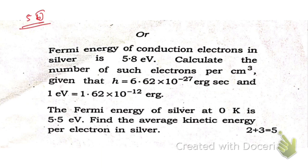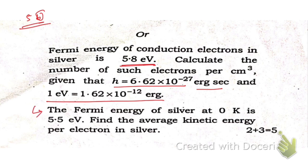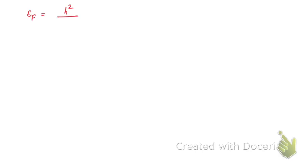Question number 5B or is also there. Let's solve this question. The Fermi energy of conduction electrons in silver is given as 5.8 electron volts. Calculate the number of such electrons per centimeter cube, given Planck's constant in erg-seconds and one electron volt. We know that Fermi energy E_F equals h-squared divided by 2m, into (3N divided by 8πV) to the power 2/3. Remember this formula — it's very important.